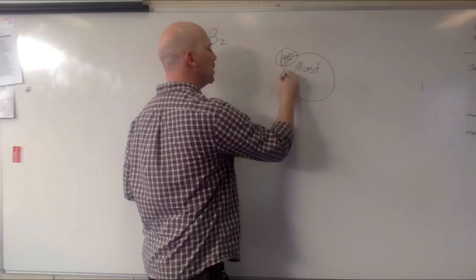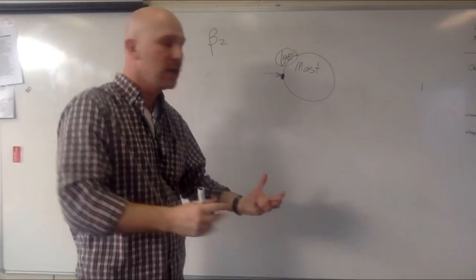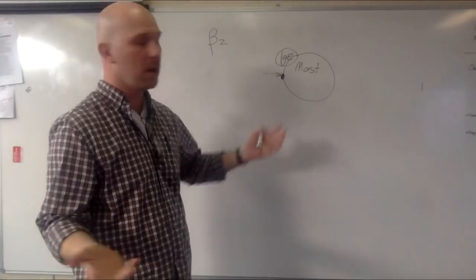So how can we stop these mast cells from degranulating? Well, it turns out, I'm glad you asked, that they have beta-2 receptor sites on them. And if beta-2 agonists hit these mast cells, then they tend to degranulate less.